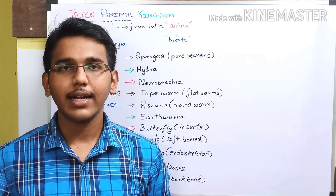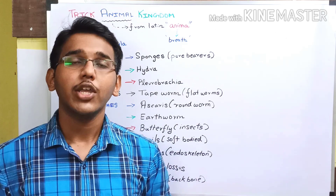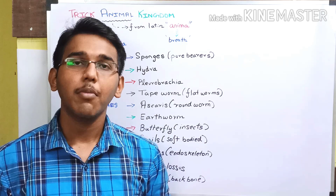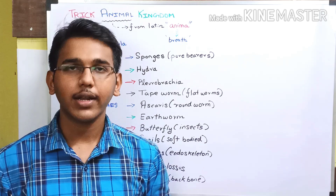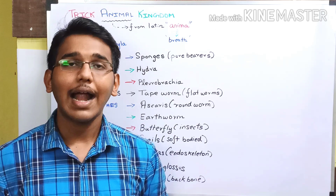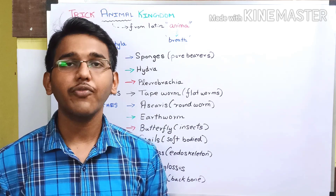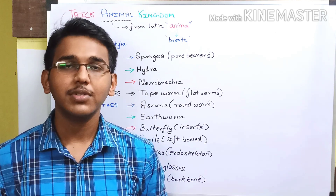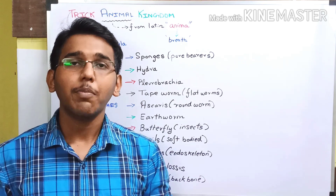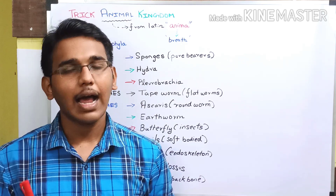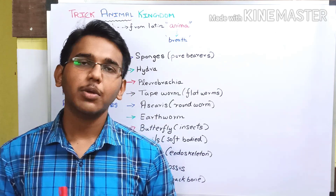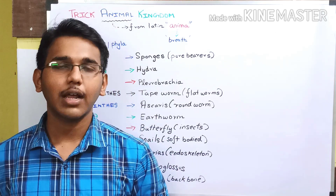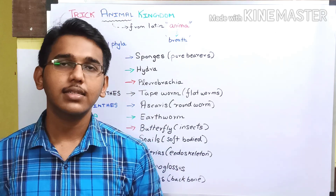The organisms included in the animal kingdom have the following characteristics: eukaryotic nucleus, heterotrophic nutrition, multicellular organization, and absence of a cell wall in their cells. That's the basic information about the animal kingdom.